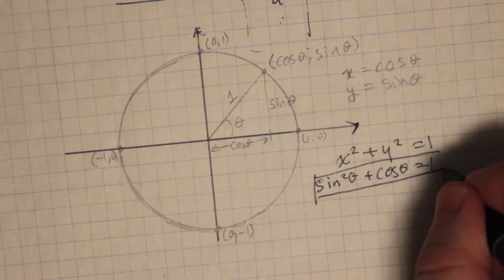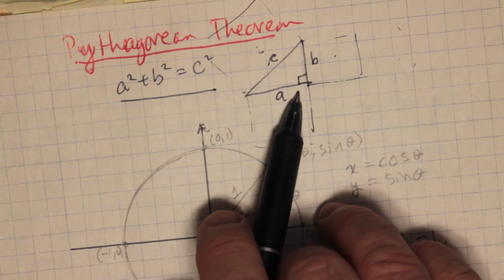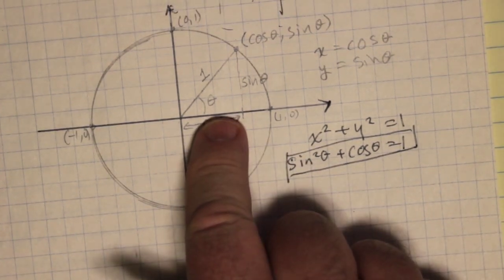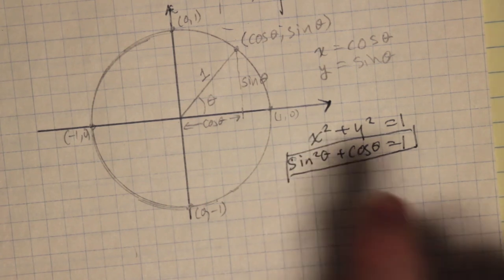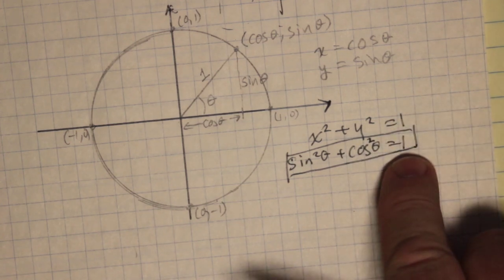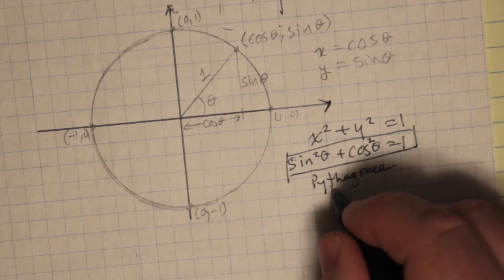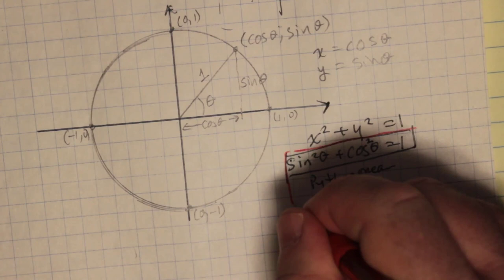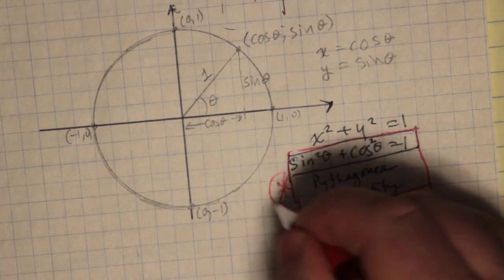This is called the Pythagorean Identity. We have the Pythagorean Theorem, which works for any right angle triangle of length A, B, C. But this works for the special triangle drawn inside a unit circle — that sine squared of an angle plus cos squared of the same angle always equals 1. This is true for all θ.